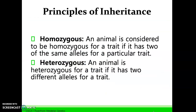Some other terms we need to identify: Homozygous — an animal is considered homozygous for a trait if it has two of the same alleles for that particular trait. Heterozygous — the animal has two different alleles for that trait. If each parent passes the same allele, the offspring is homozygous. If those parents pass two different alleles, it is heterozygous.